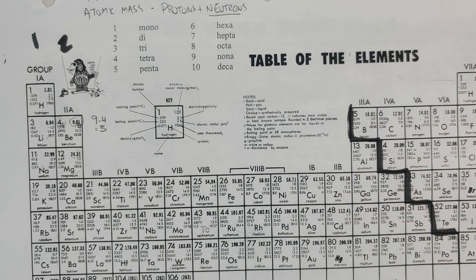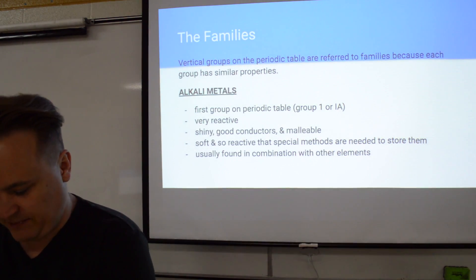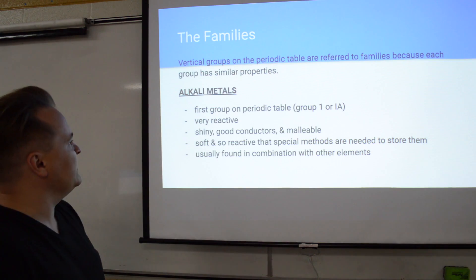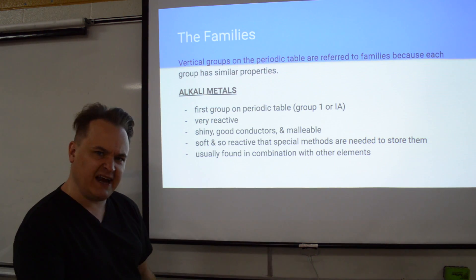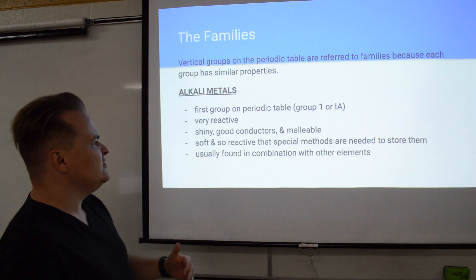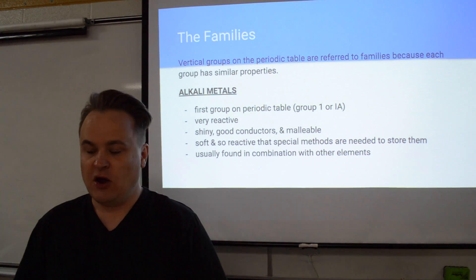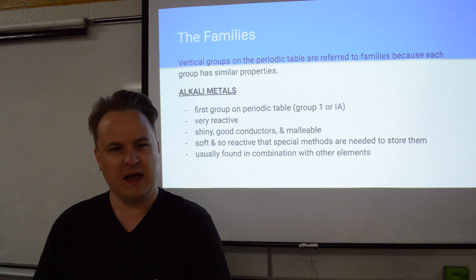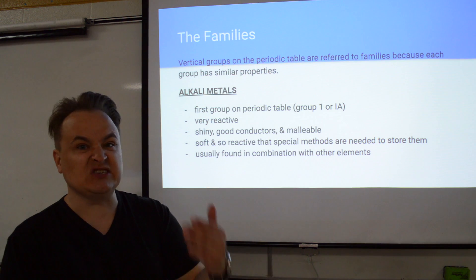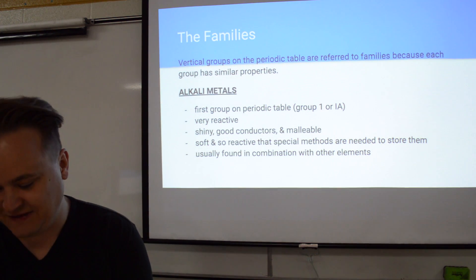The first family is called the alkali metals. Vertical groups on the periodic table are referred to as families because each group acts the same way. The alkali metals are extremely reactive — they're shiny, good conductors, malleable, and soft. They're so reactive that you have to store them specially; they're usually found with other elements in nature and you have to separate them to get a pure form. Lithium, for example, is used in batteries because it's so reactive — it only has one electron in its outer shell.